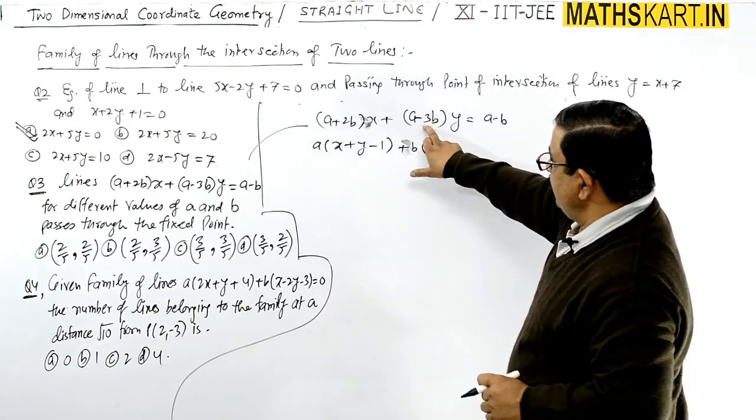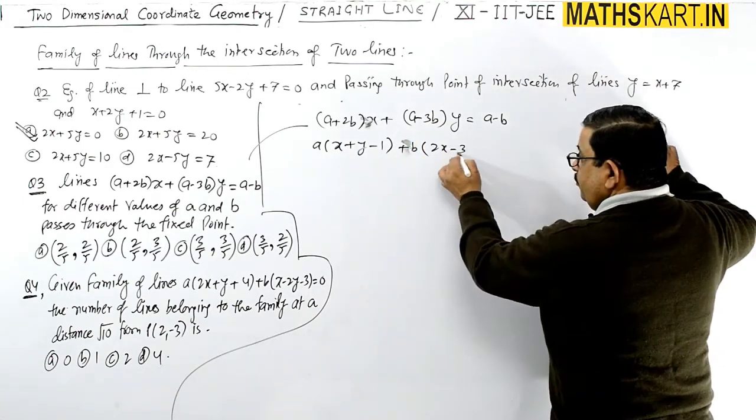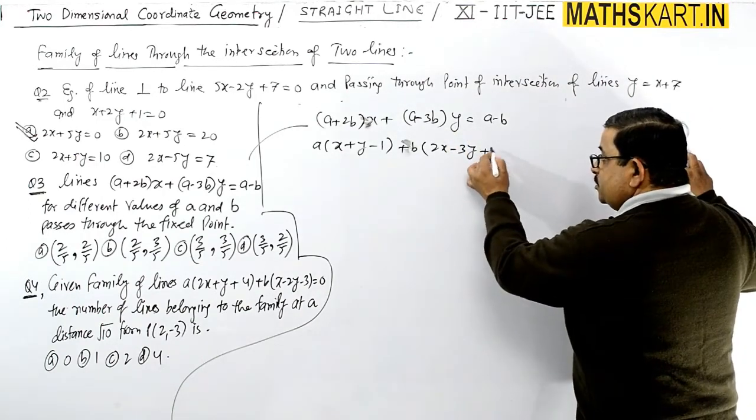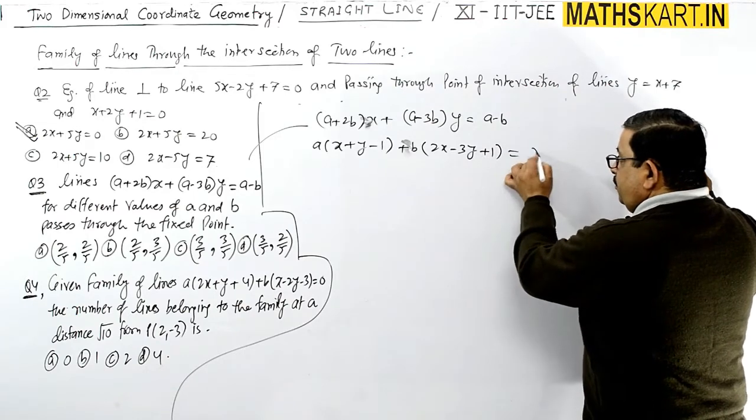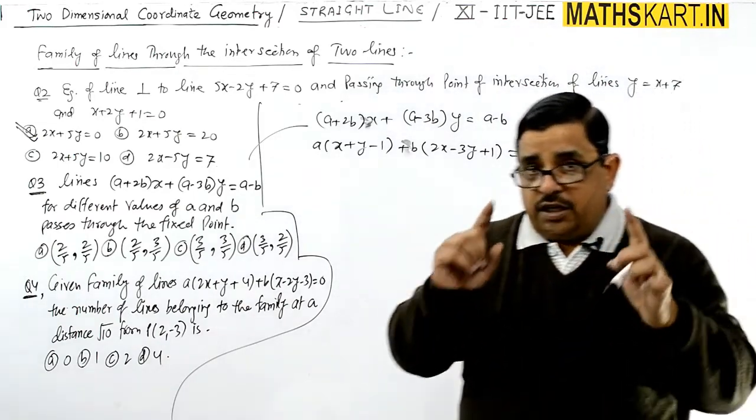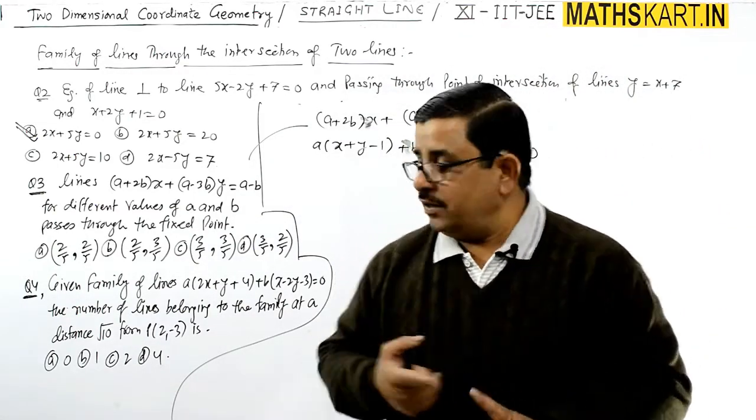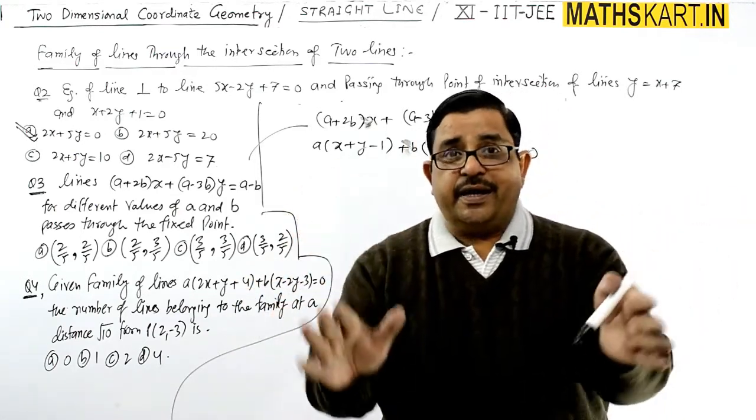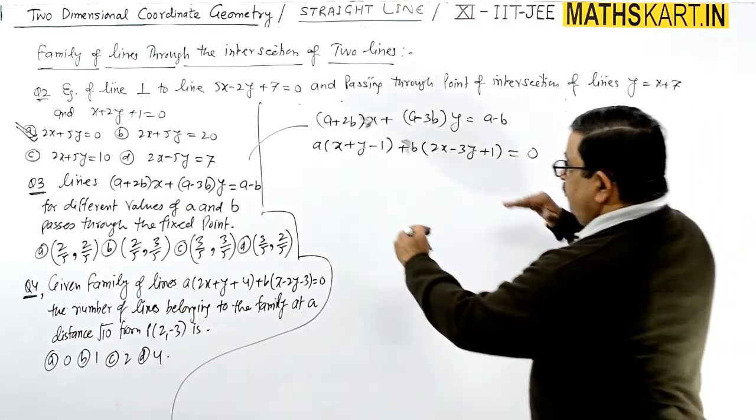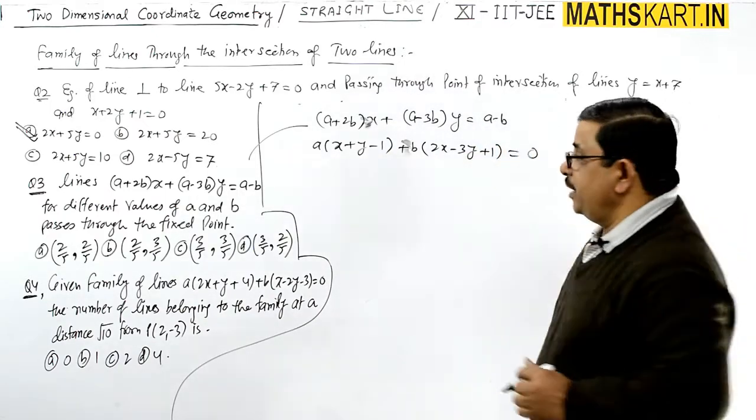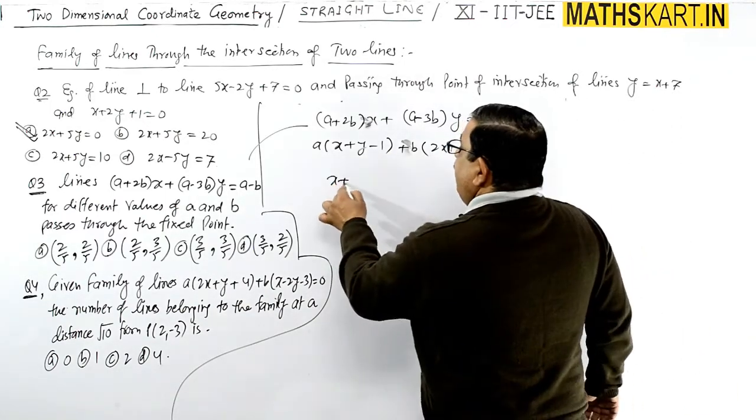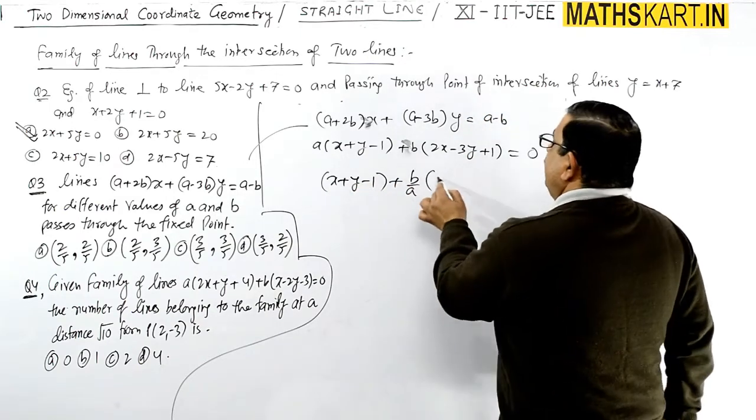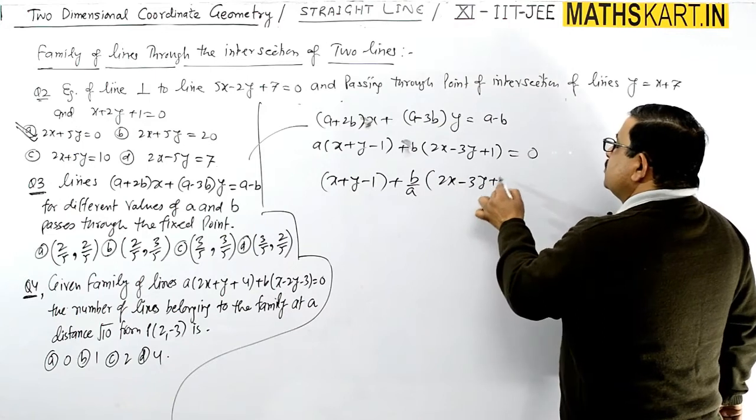Working through the algebra: these A and B values are different. We can divide the whole equation by A. This gives us x+y-1 plus (B/A)(2x-3y+1) = 0.